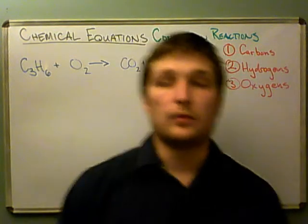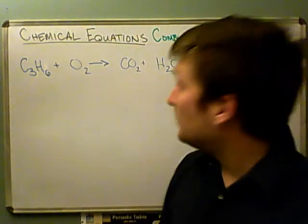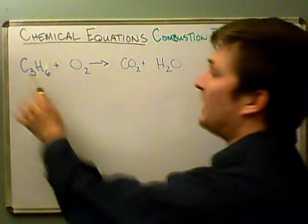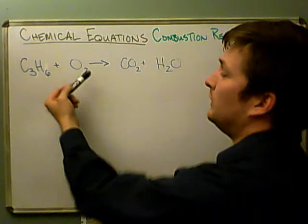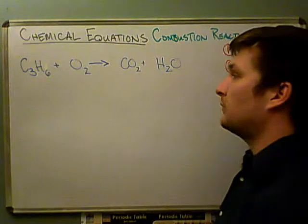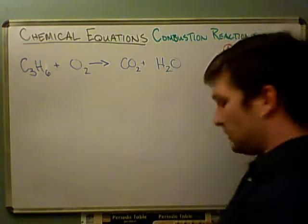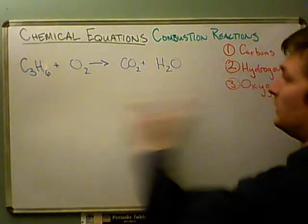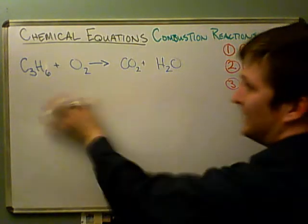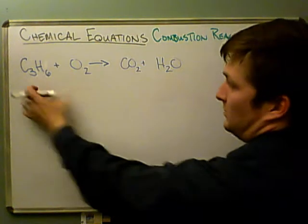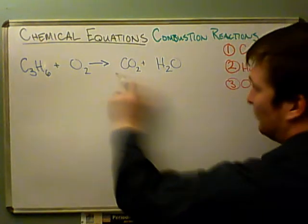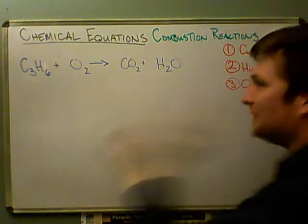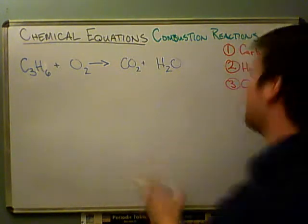Here's another example of balancing a chemical equation — a combustion equation with a hydrocarbon burned in O₂ gas. The first thing I can see is that this isn't balanced, because we have three carbons on this side and only one carbon on the other side. So I know immediately this isn't balanced and I need to balance it.